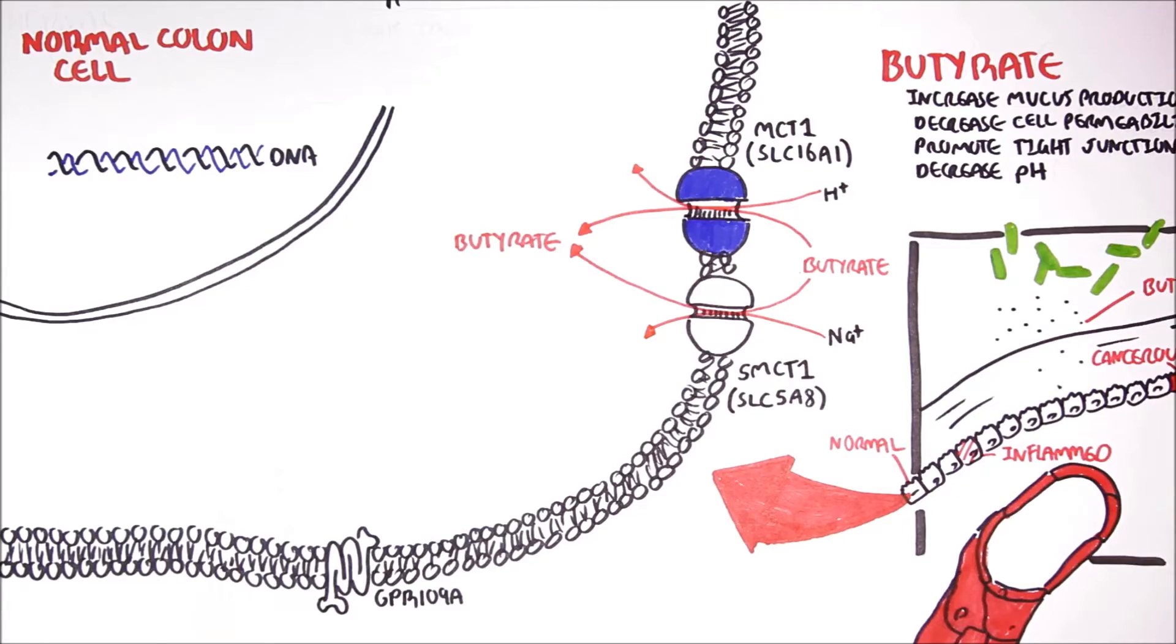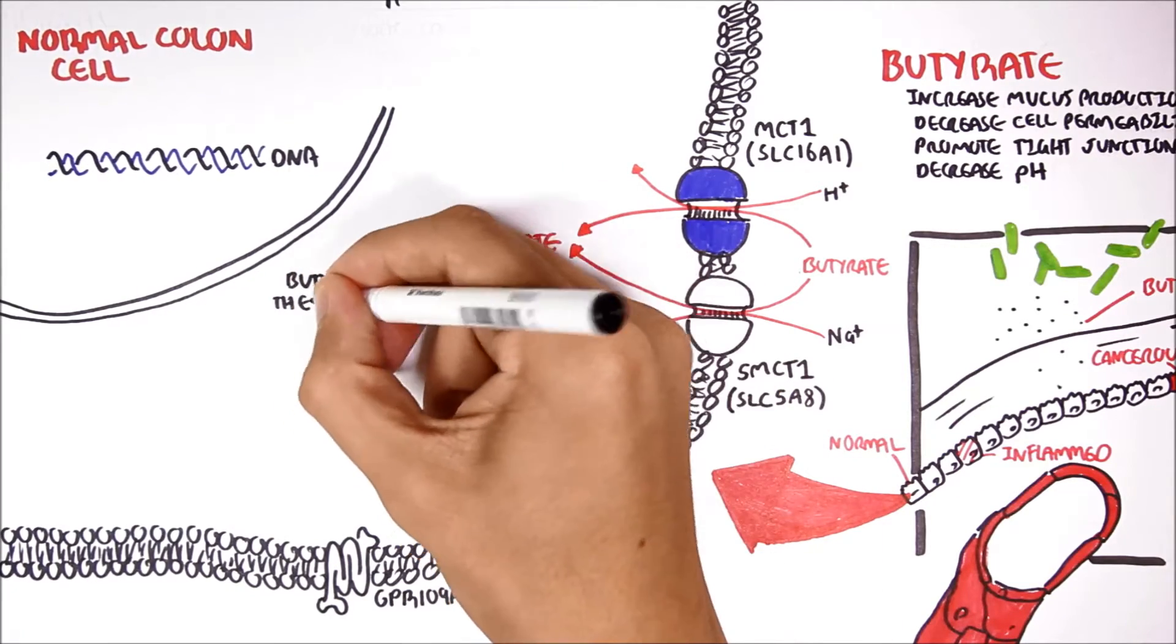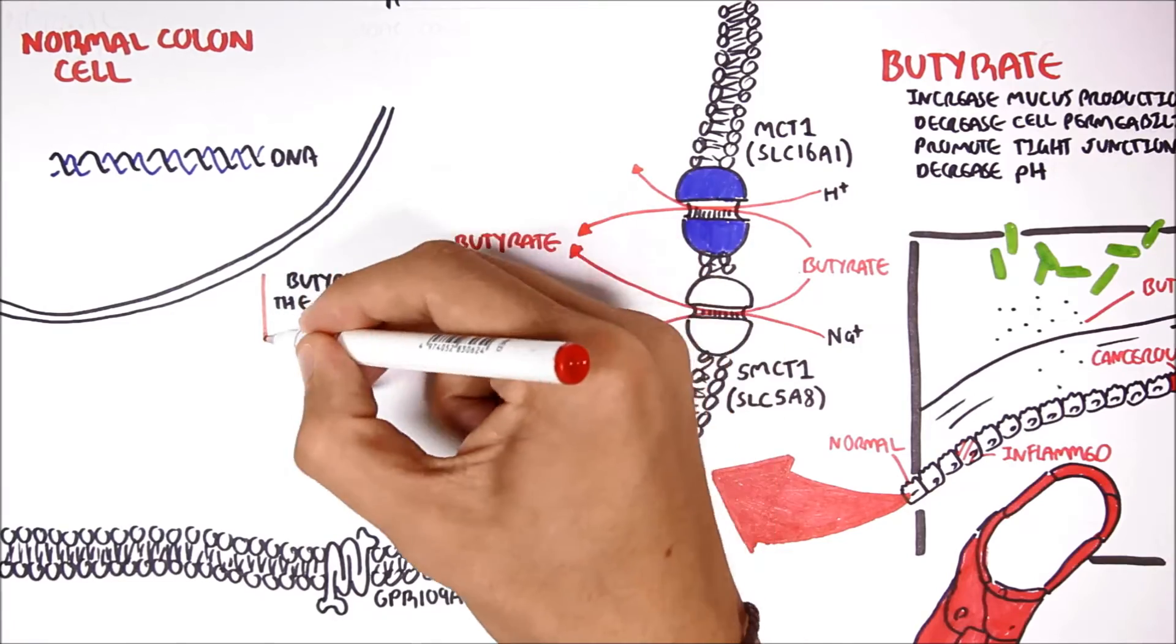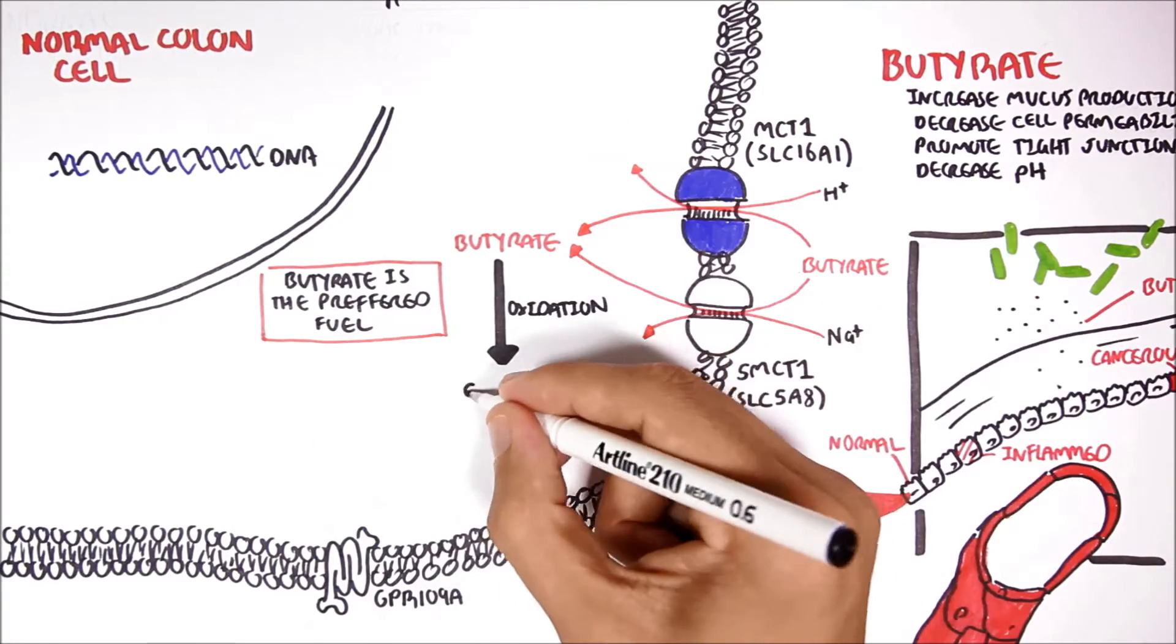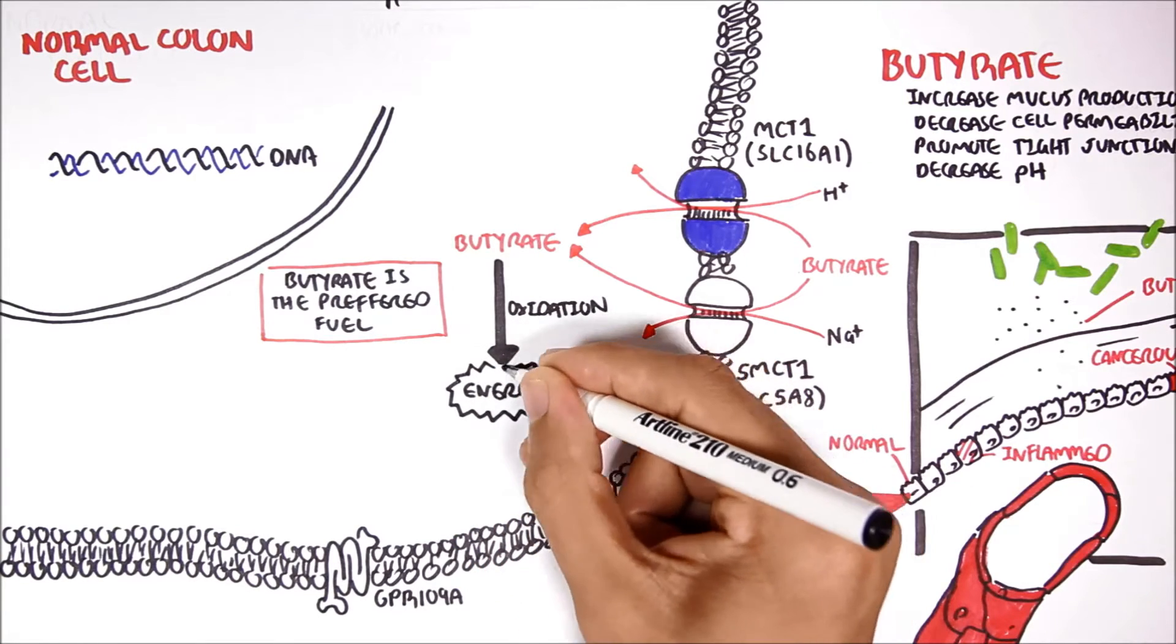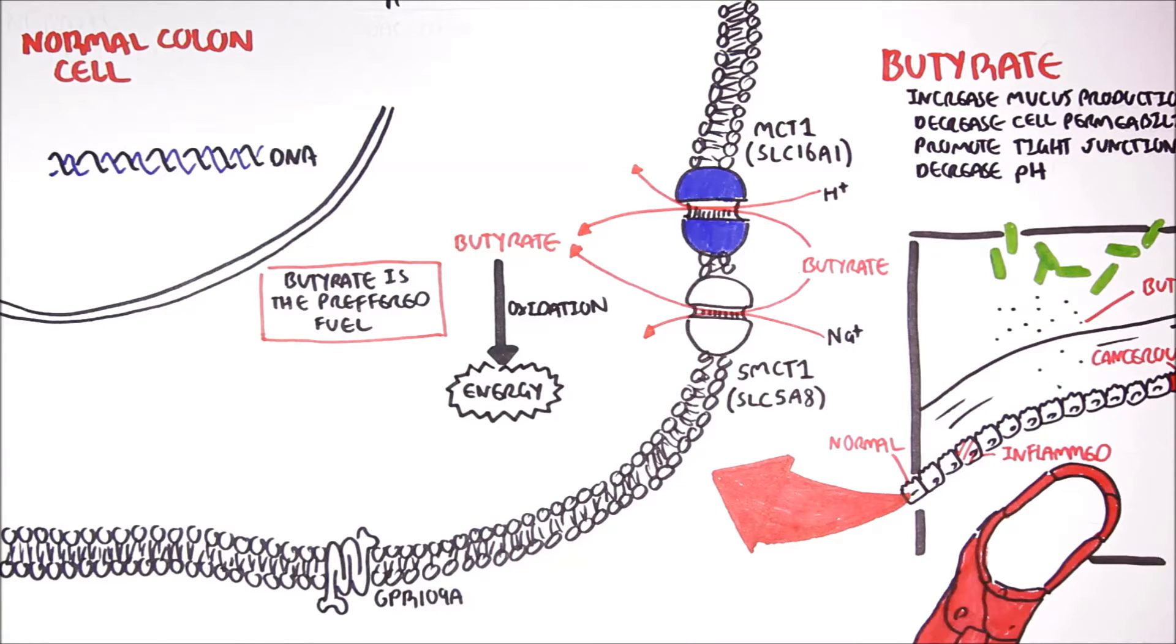Now butyrate is the preferred fuel in colon cells. Butyrate is used preferentially over glucose. Butyrate is oxidized in the colon cells to produce energy, maintaining colon cell integrity and health.